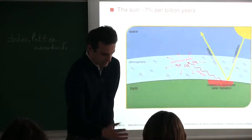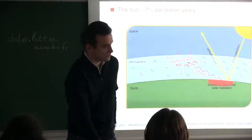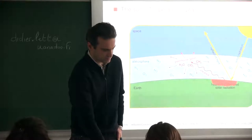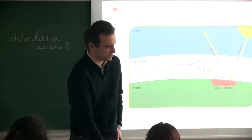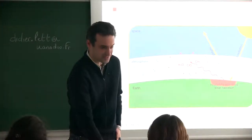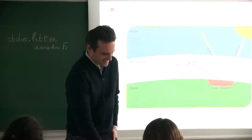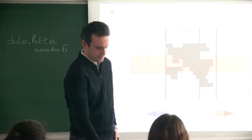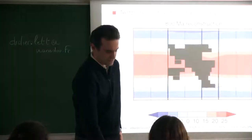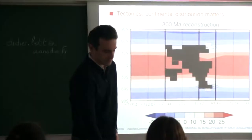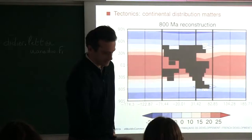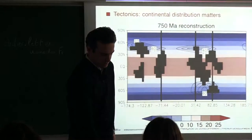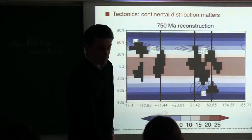To summarize: the sun, billions of years, plus 7% every billion of years. Then tectonics — you have simulations of the different kinds of climates you get depending on the place of the continents. For example, comparing different continental configurations gives you a very different range of temperatures.